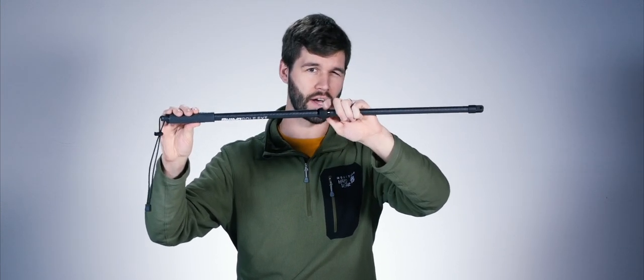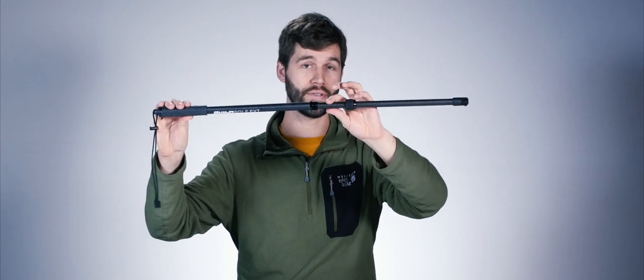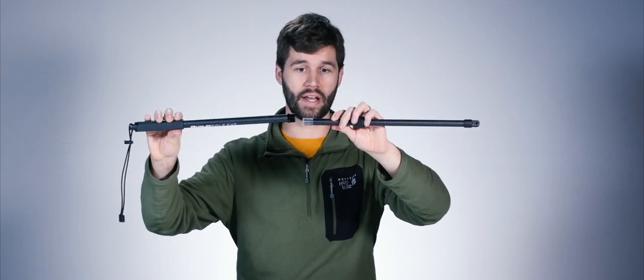But if you unscrew the locking collar all the way, then the two sides of the pole may separate and the plastic stopper inside can fall off. If that's happened to you, here's how to put it back together.